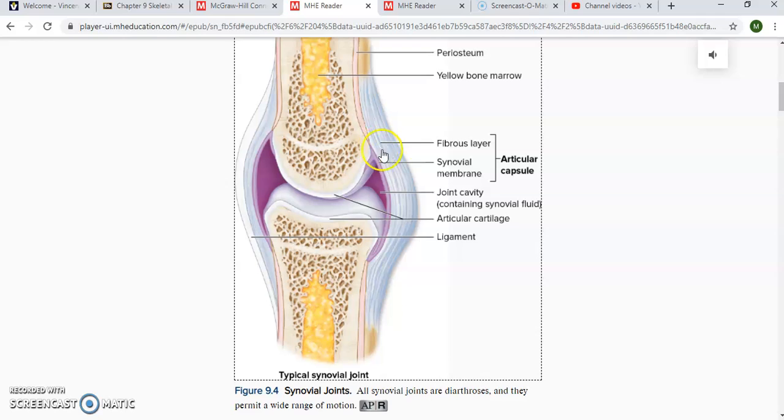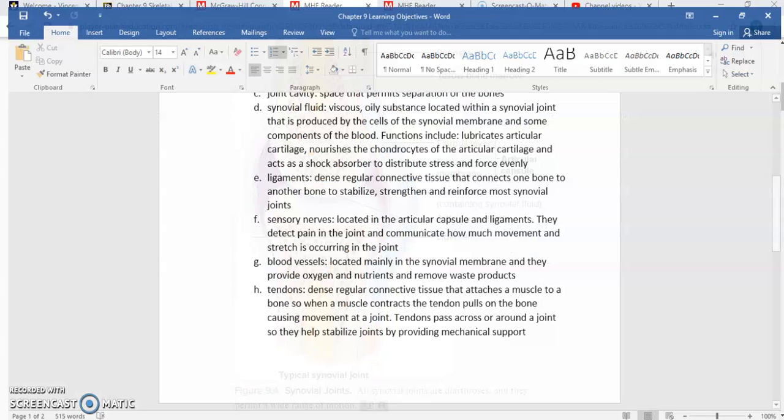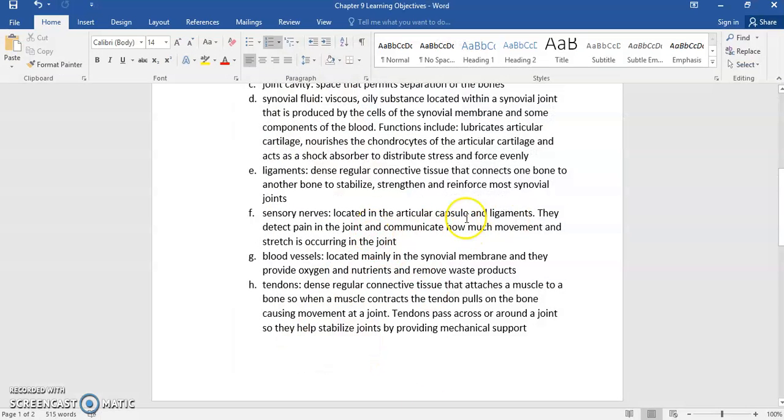But ligaments definitely have sensory neurons, as well as this articular capsule. So the ligaments and the articular capsule structures have sensory neurons. So if you have any sort of injury to them, you're going to get information sent to your brain that's pain stimuli. And so you'll know that you hurt something.